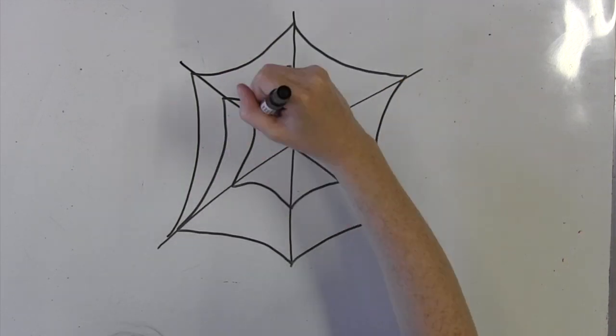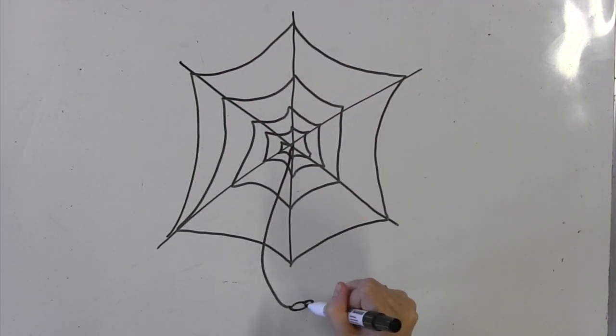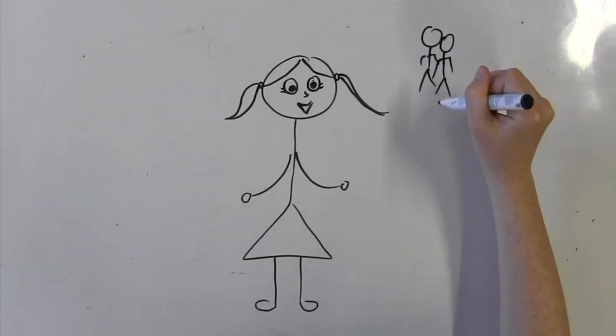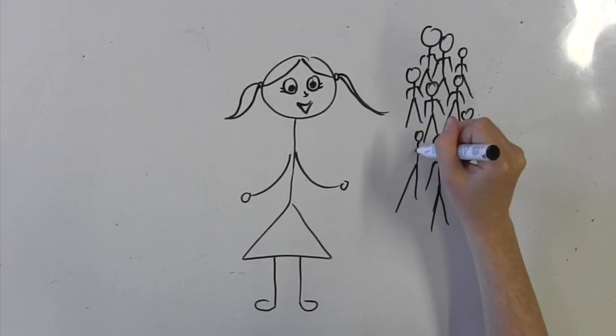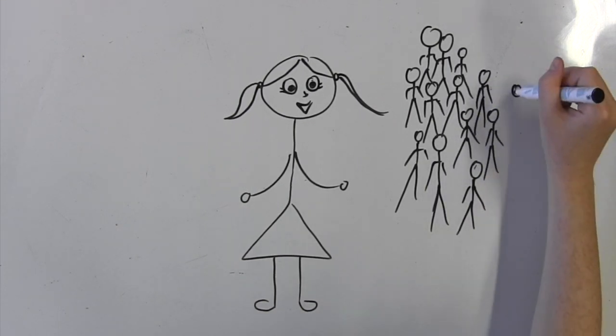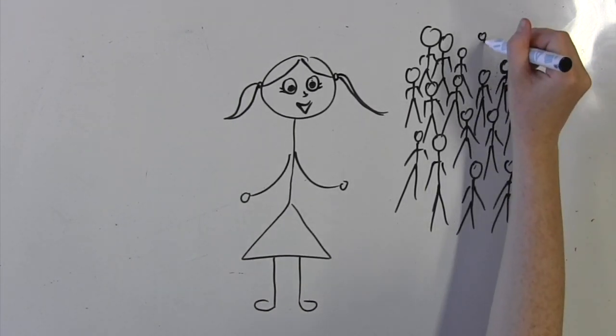Just like when a spider is born, it instinctively knows how to make a web. Just like the ability to spin a web is programmed in the spider, Chomsky thought that the ability to learn a language was also programmed in humans from birth.